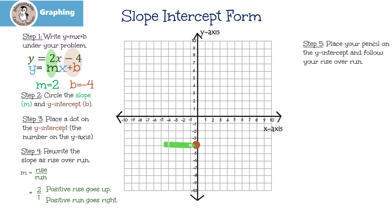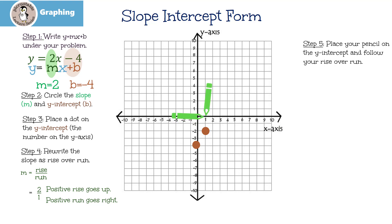The first thing we need to do is put our pencil on our y-intercept. Now remember that my slope is up 2 over 1. So we're going to go up 2, and then we're going to run 1. They're both positive, so I'm going in the positive direction for both of them. And I'm going to put my next dot. Let's try that one more time: I'm going to put my pencil on the dot, go up 2, and then my run is 1, so I'm going to run 1 and put another dot.